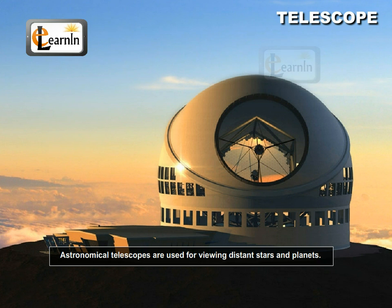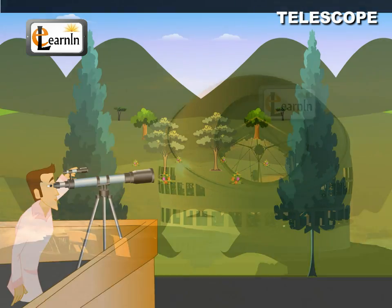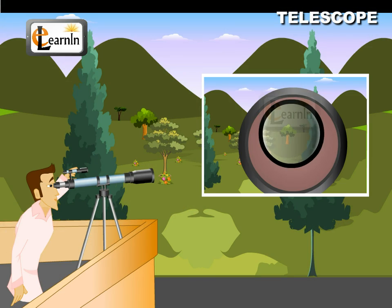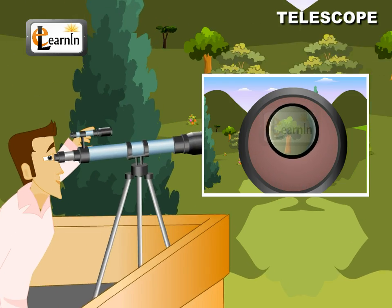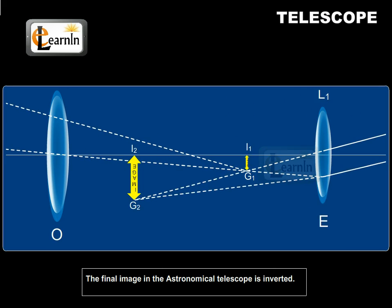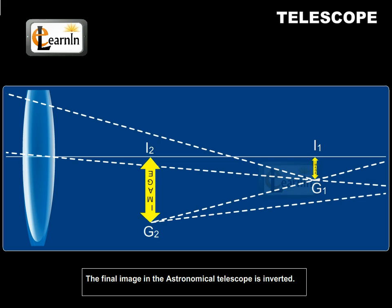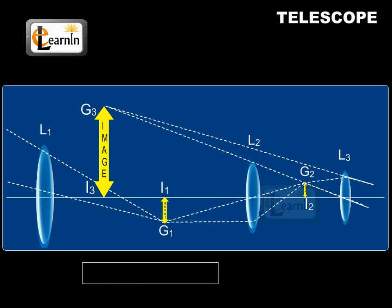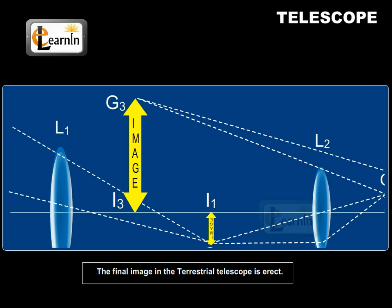Astronomical telescopes are used for viewing distant stars and planets. Terrestrial telescopes are used for viewing distant objects on the earth. The final image in the astronomical telescope is inverted, while the final image in the terrestrial telescope is erect.